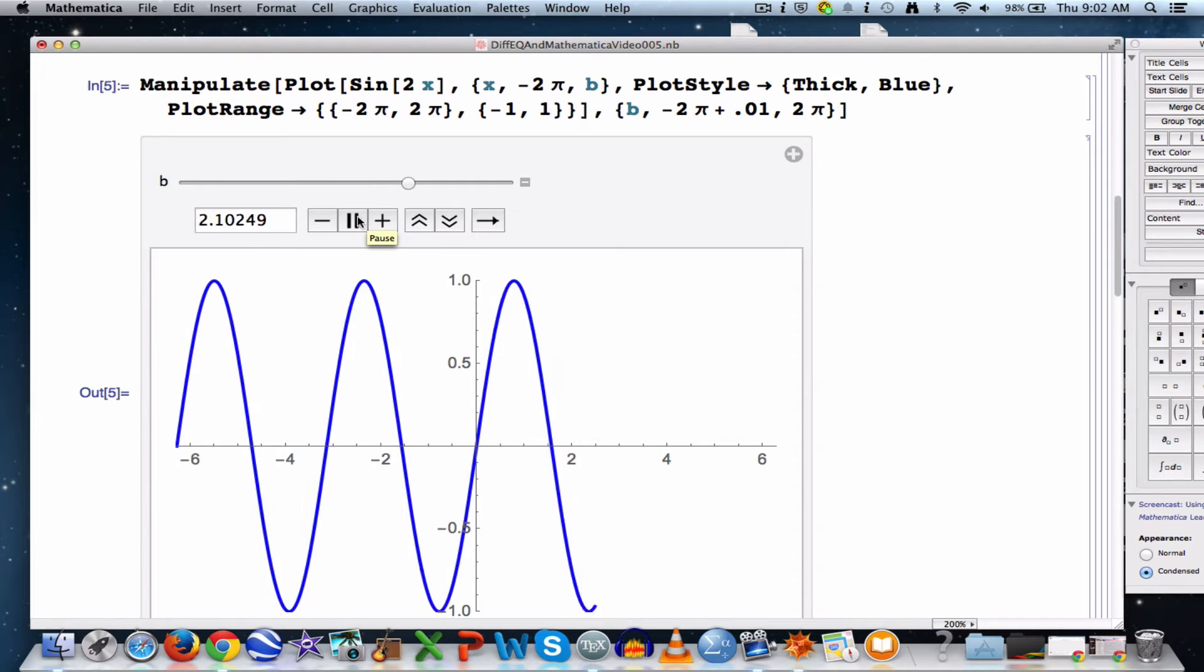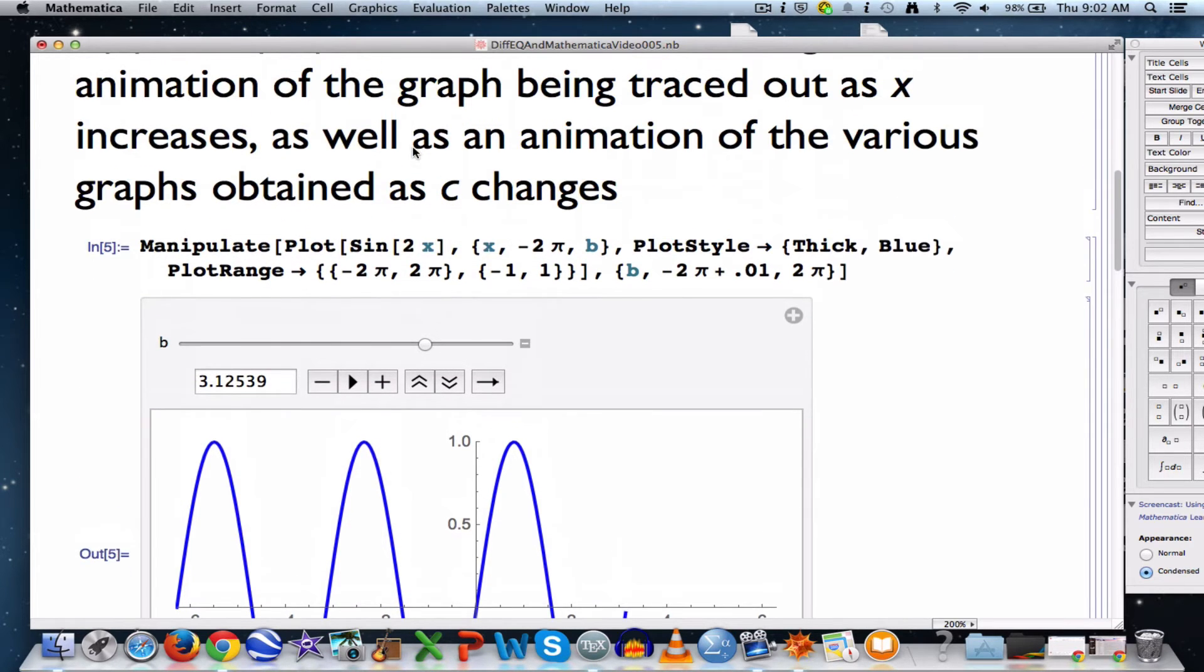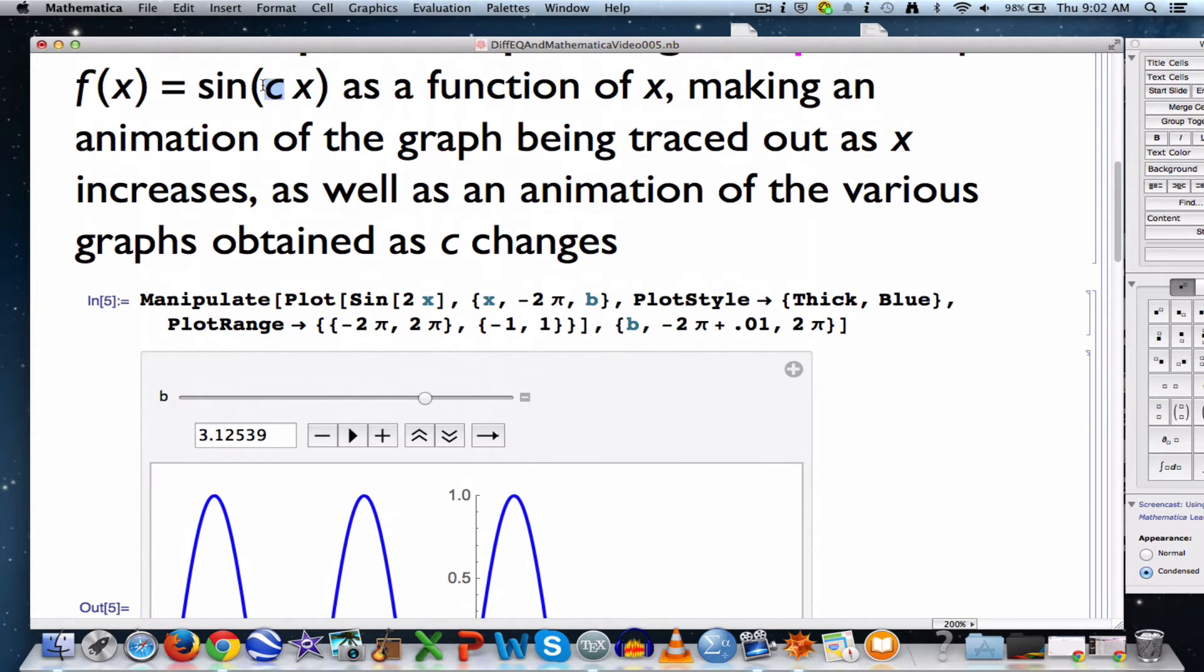Now I want to do the extra thing, the more important thing: replace the 2 with a c and let c change. If you replace 2 with c, don't stop there because this won't work. When these variables are next to each other, cx, Mathematica thinks of that as one variable. I either need a space to multiply them, or I almost always put a star in there to multiply them. I also need to say what c varies over. Let's start c at the value 1 and go up to 5.